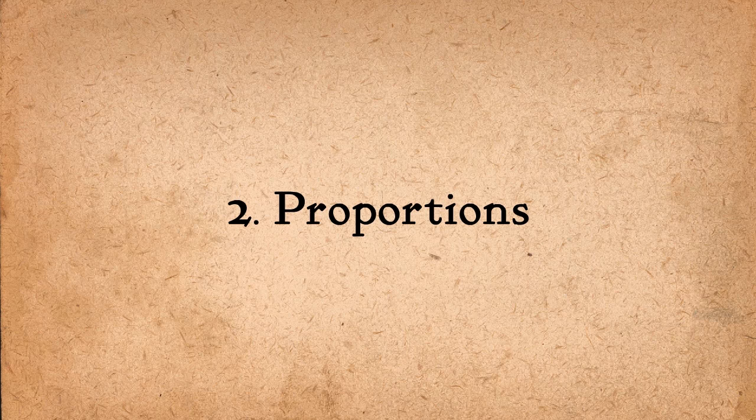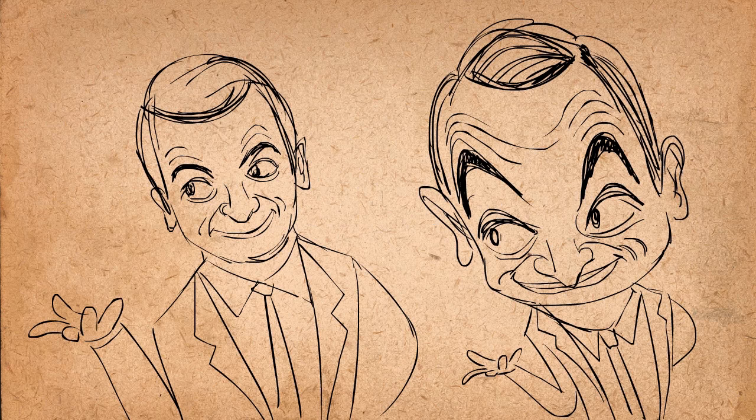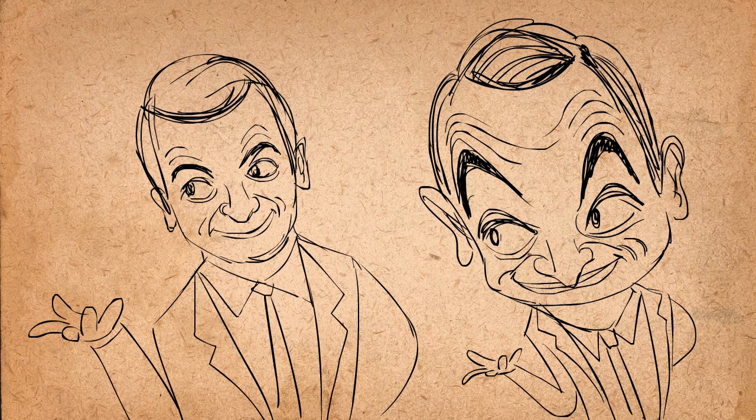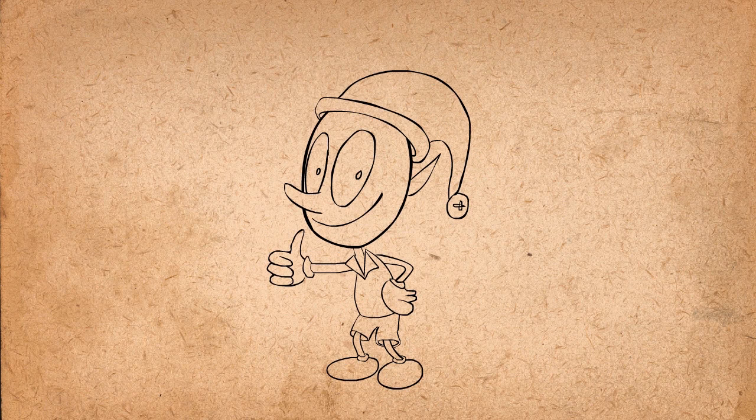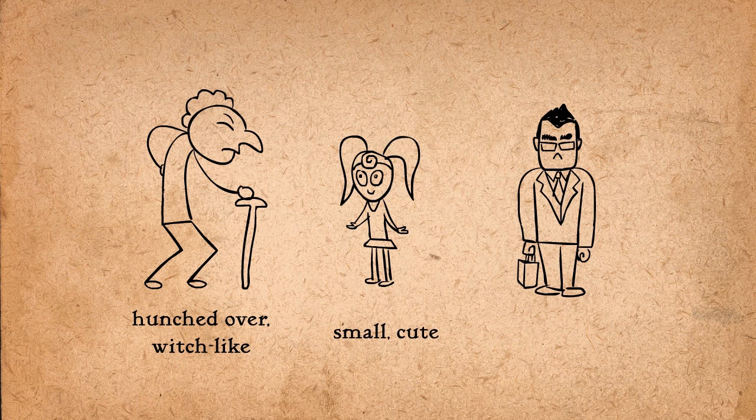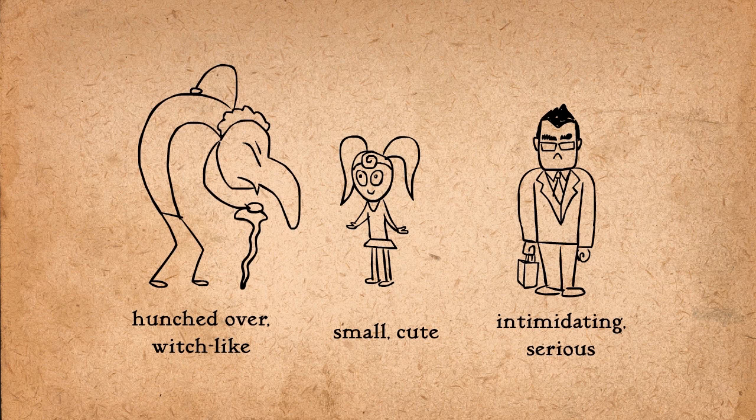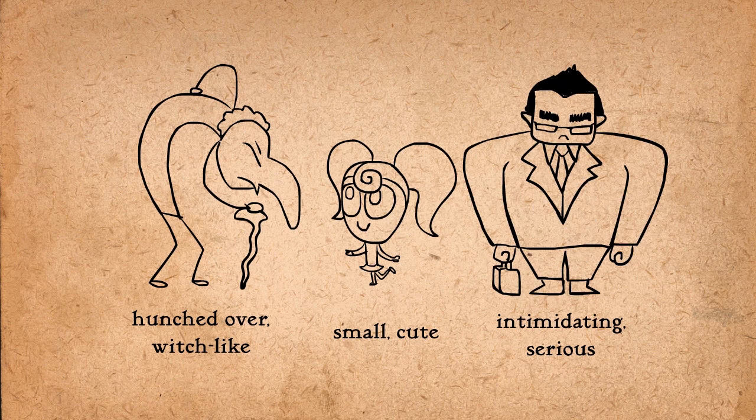Second, play with proportions. Cartoonists often magnify the things we find interesting and shrink the things we might find ugly or boring. For example, they might enlarge the head and eyes, shrink the body, and make the hands larger. Finding the aspect of a character that defines his or her personality and blowing it up can often create a more appealing design.